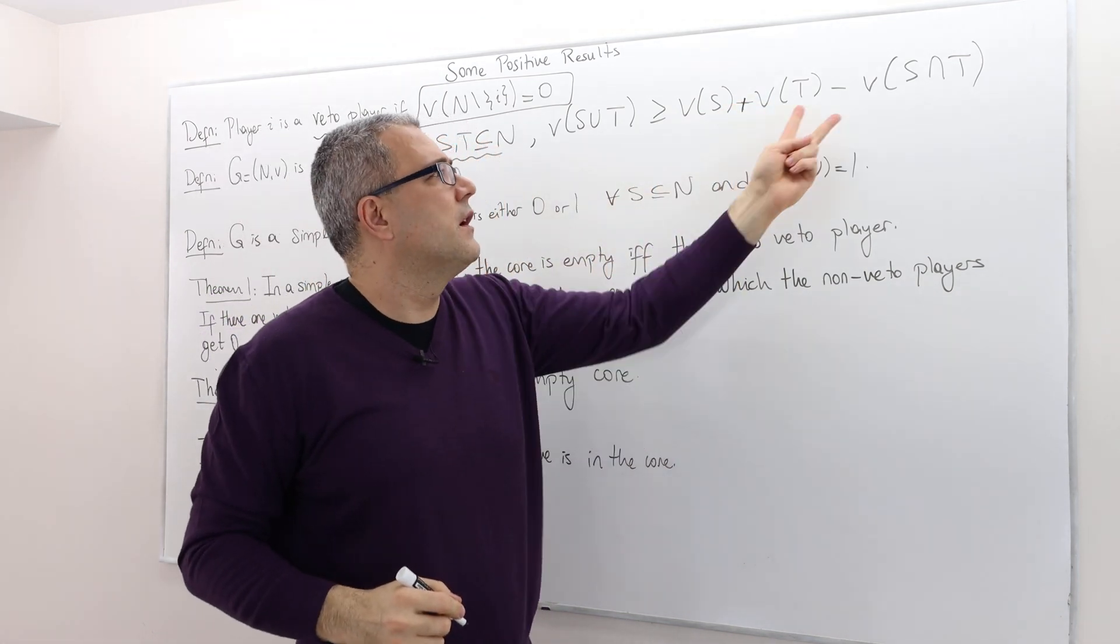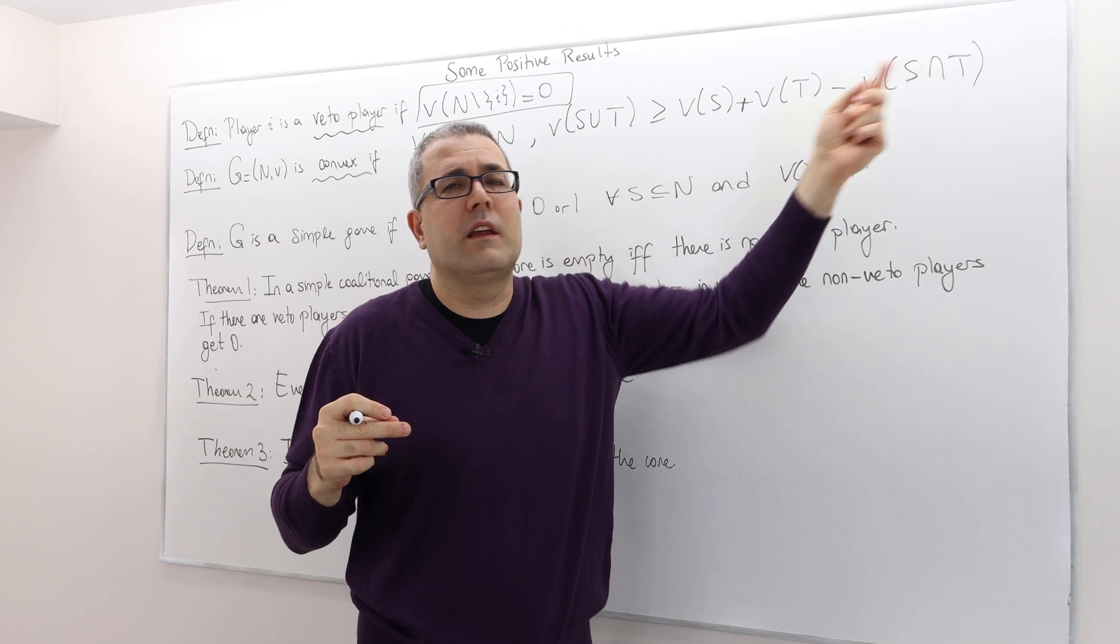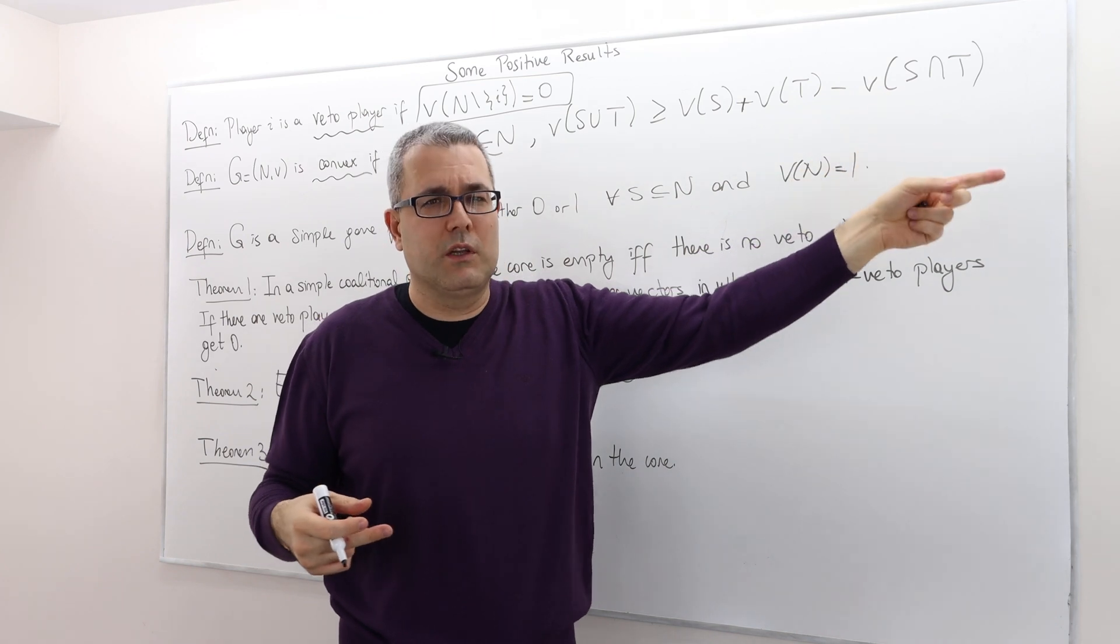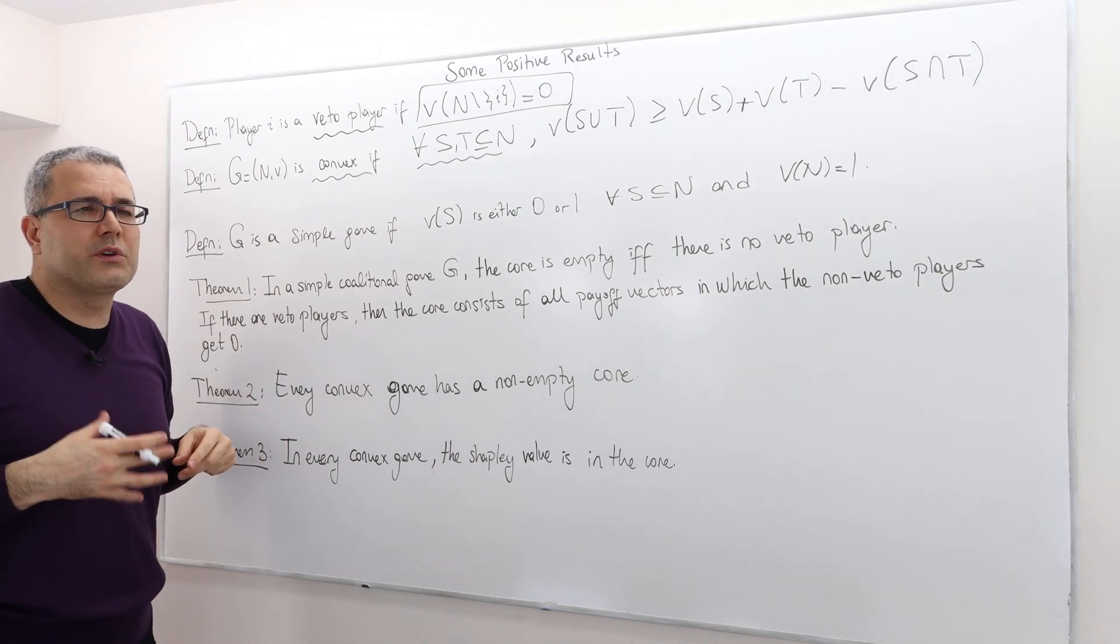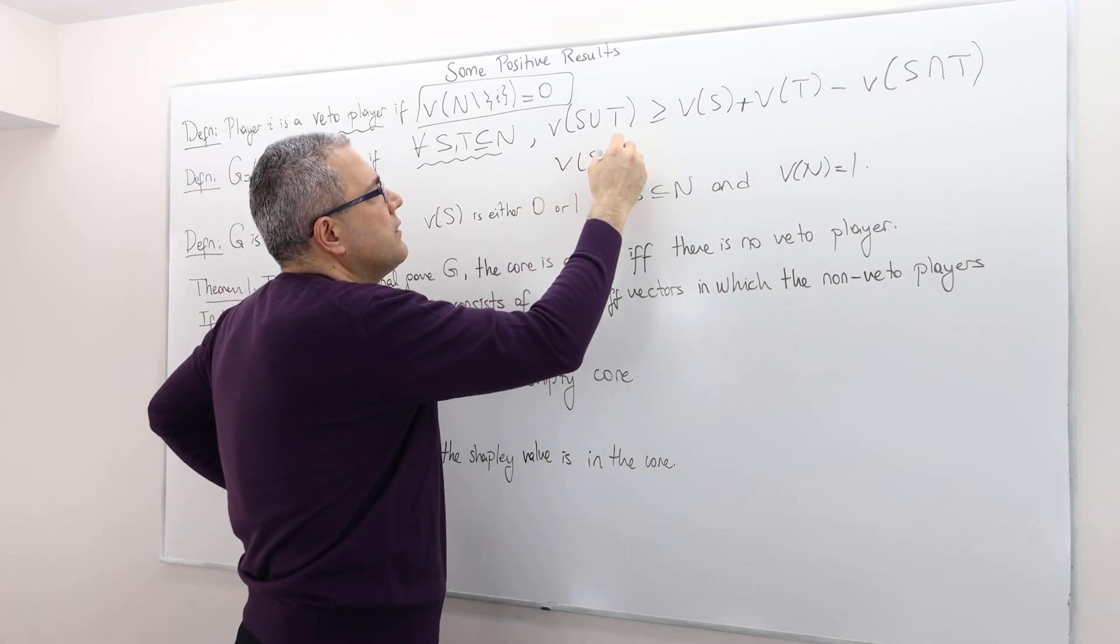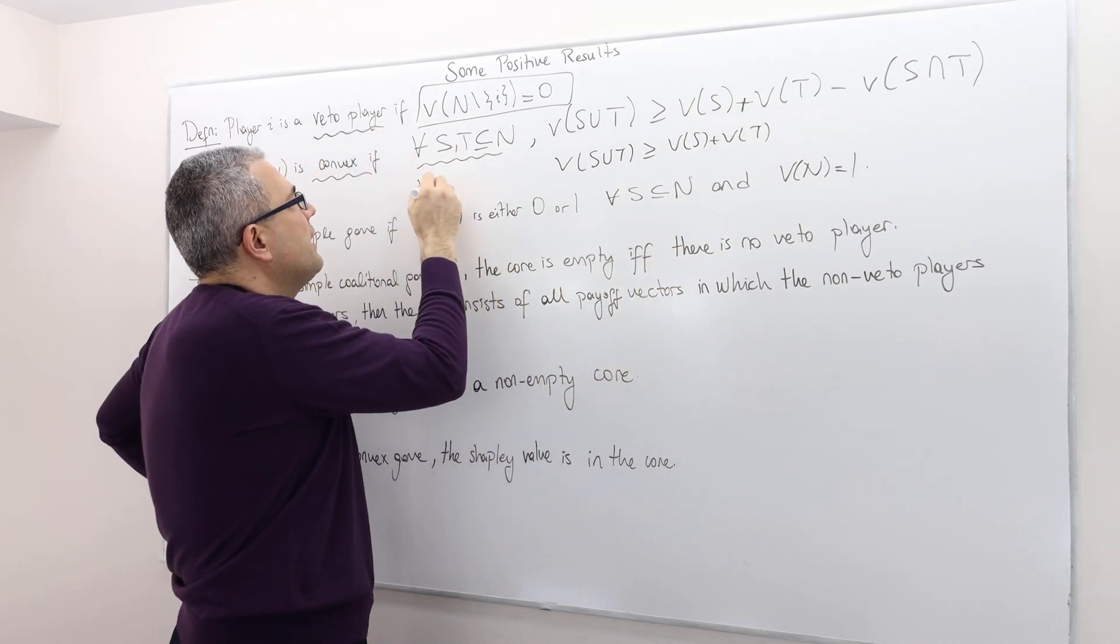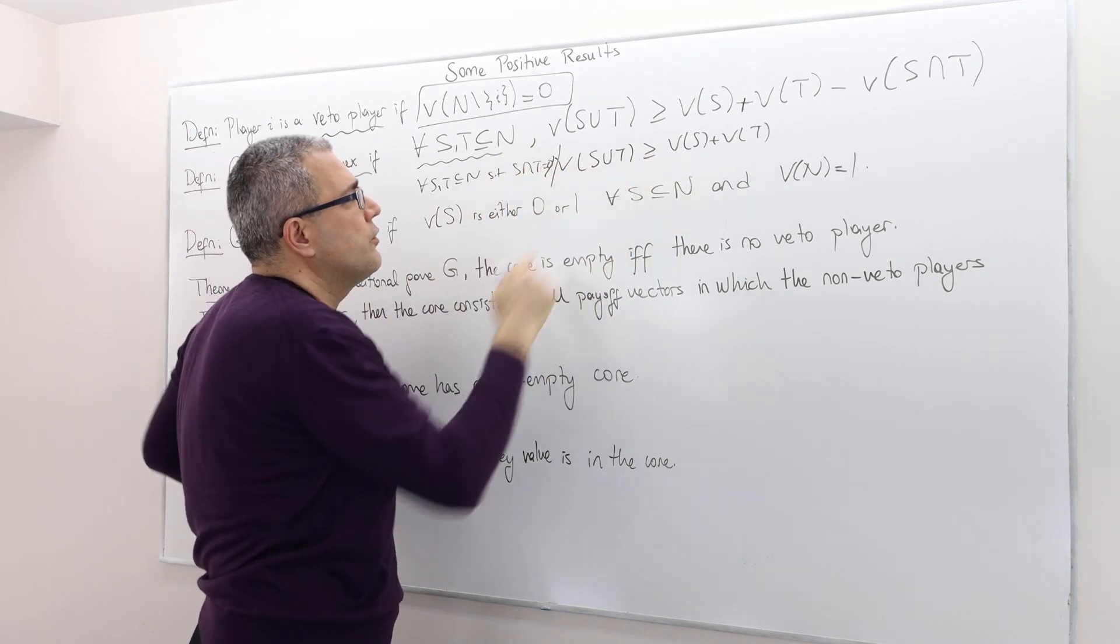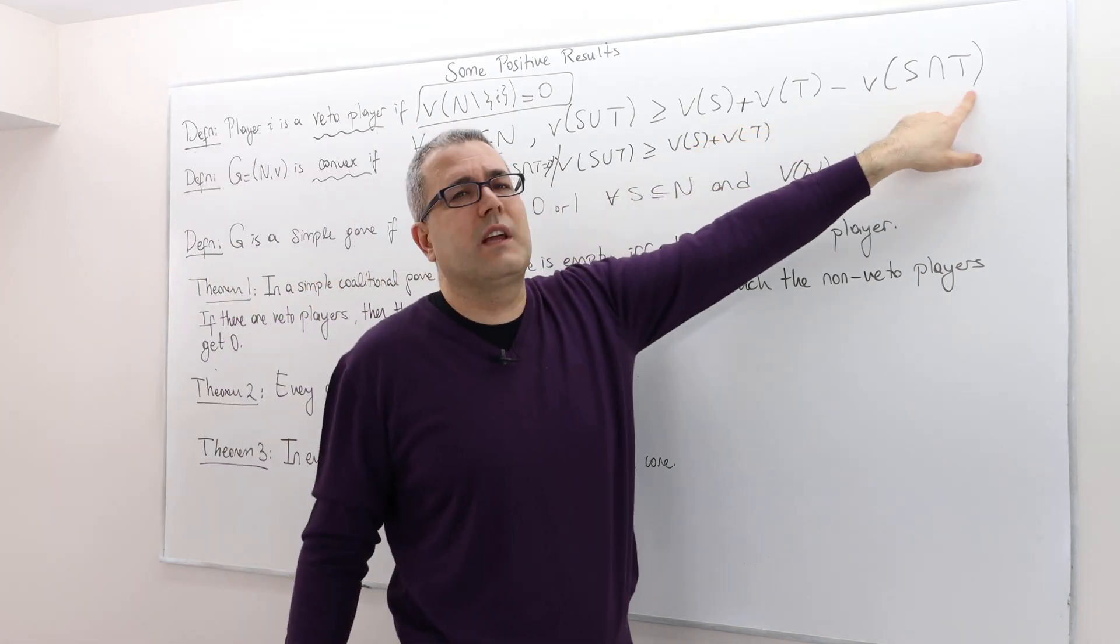If there are some agents that are sort of appearing in both coalitions, sort of the people in the intersection, all right? So convexity is stronger than superadditivity. If you remember superadditivity, it was sort of related, right? V(S union T) is greater than or equal to V(S) plus V(T). That was the definition. But it was true for any S, T subset of N such that S intersection T is empty. So this was true for any disjoint coalitions. So obviously, if they're disjoint, so that's zero.